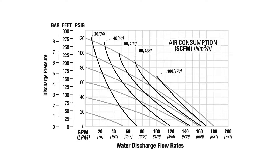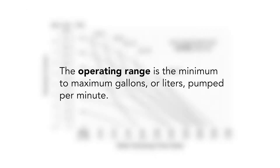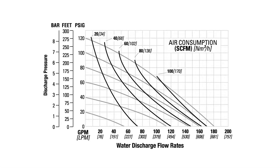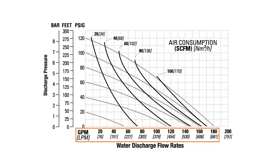The AODD pump's performance curve defines the pump's overall operating range — the minimum to maximum gallons or liters pumped per minute. This is identified by looking at the horizontal axis data range as well as considering the gray air inlet curved axis. For example, this performance curve defines this AODD pump's overall operating range from a minimum of zero gallons per minute to a maximum of over 180 gallons per minute.